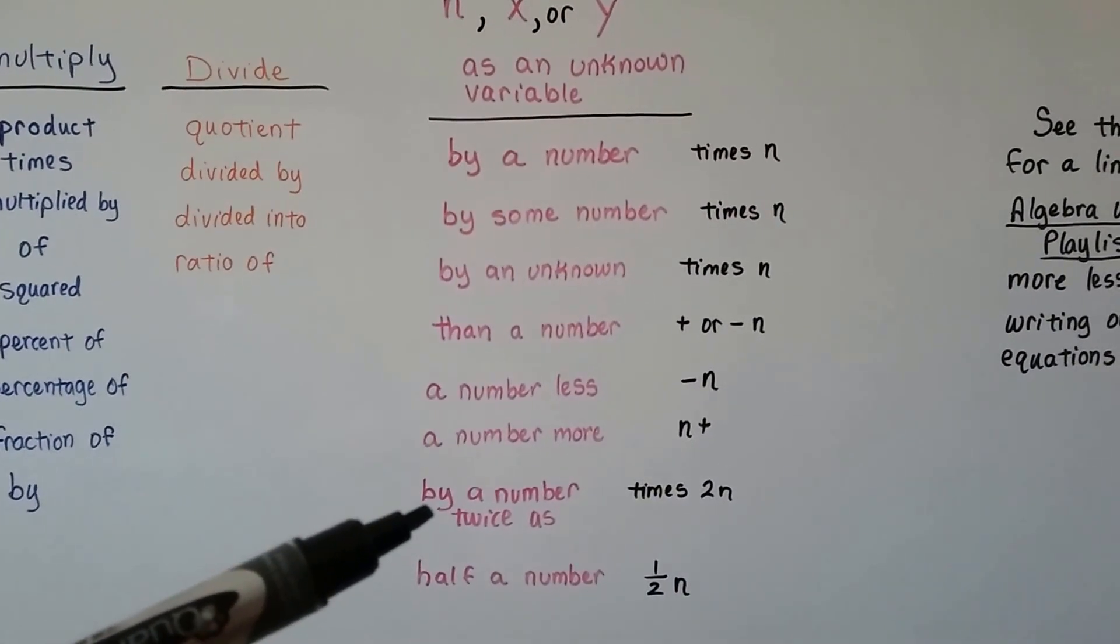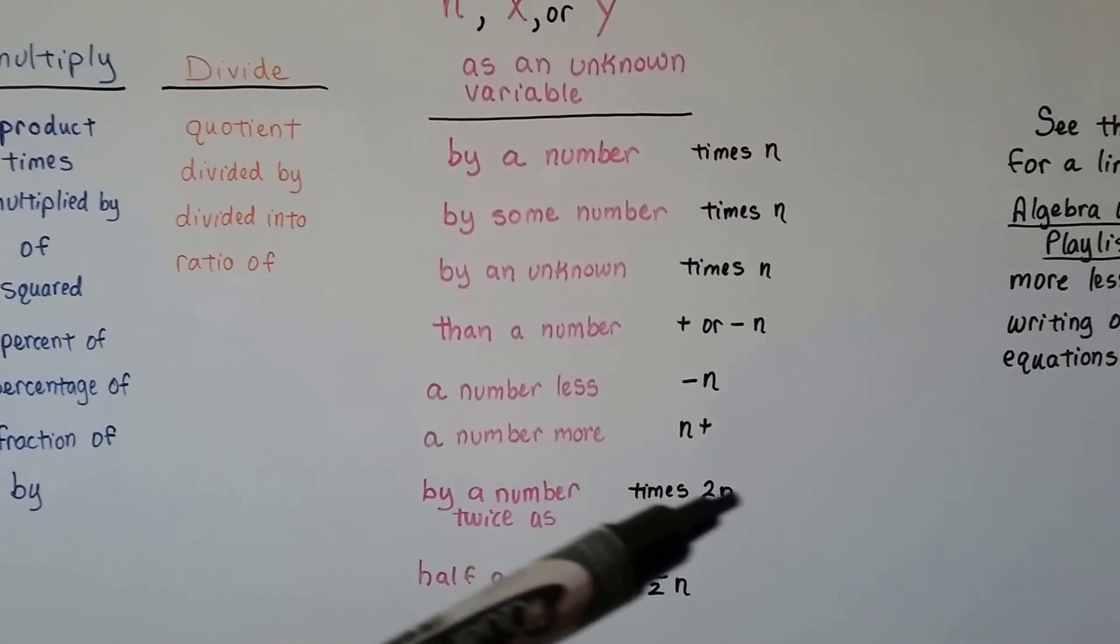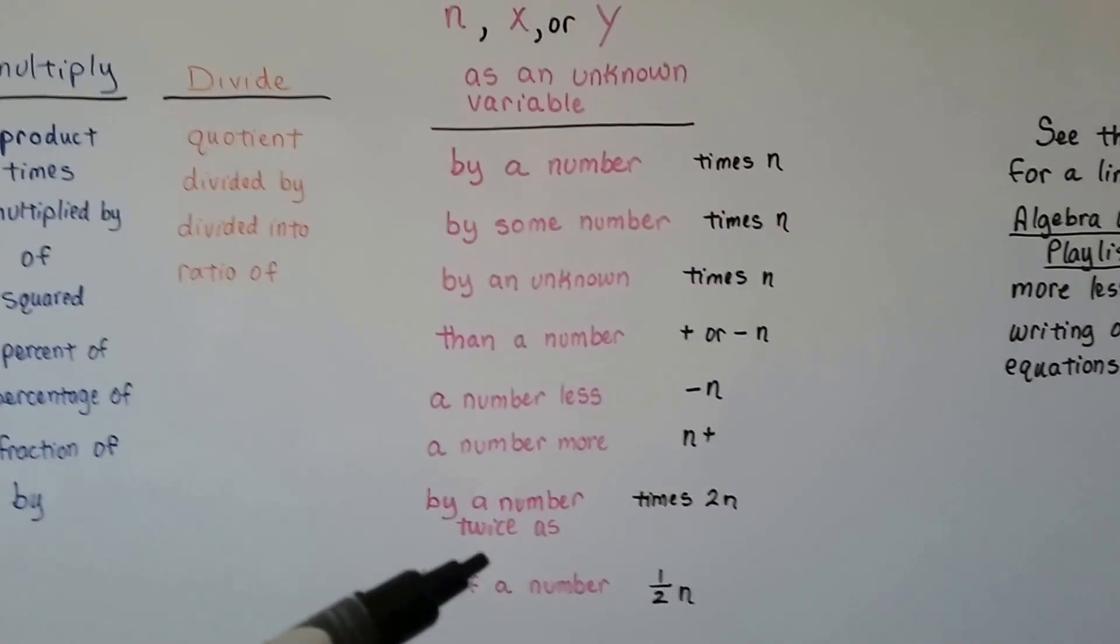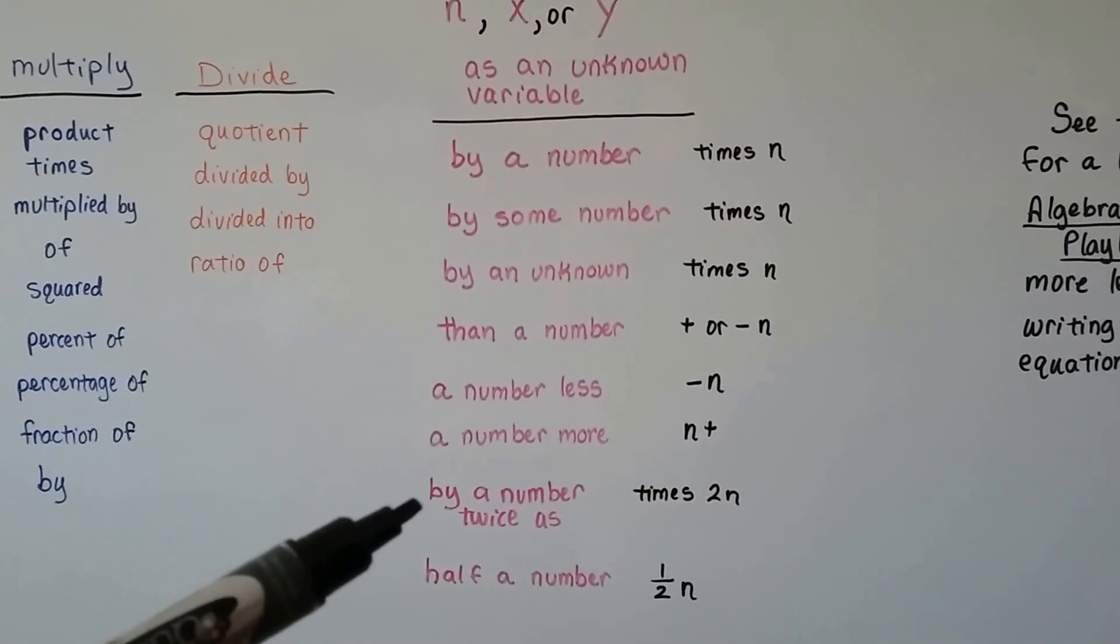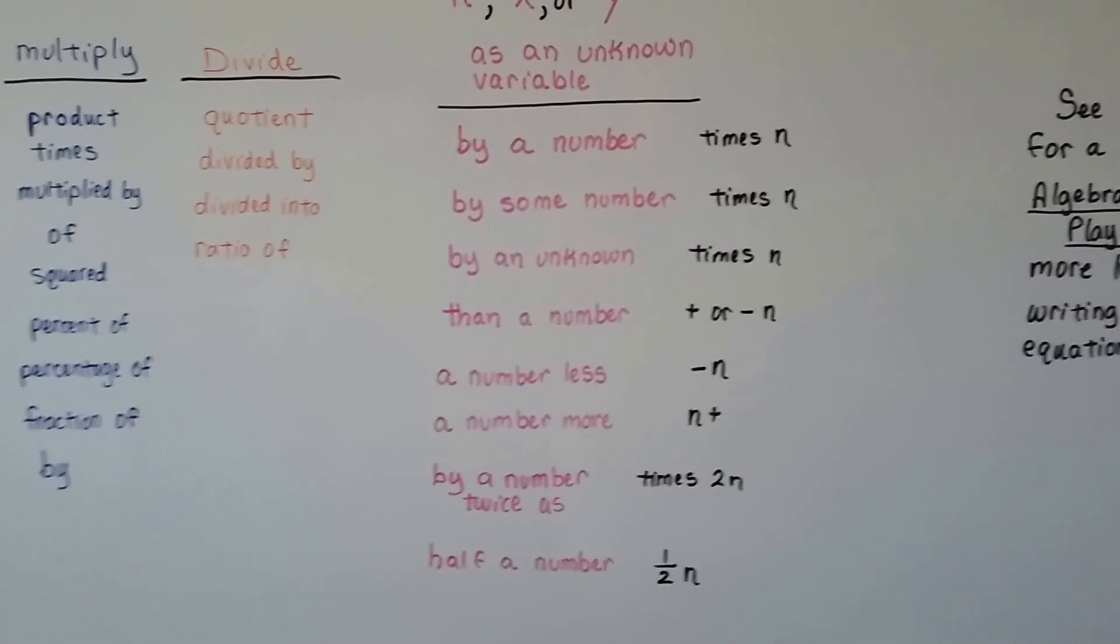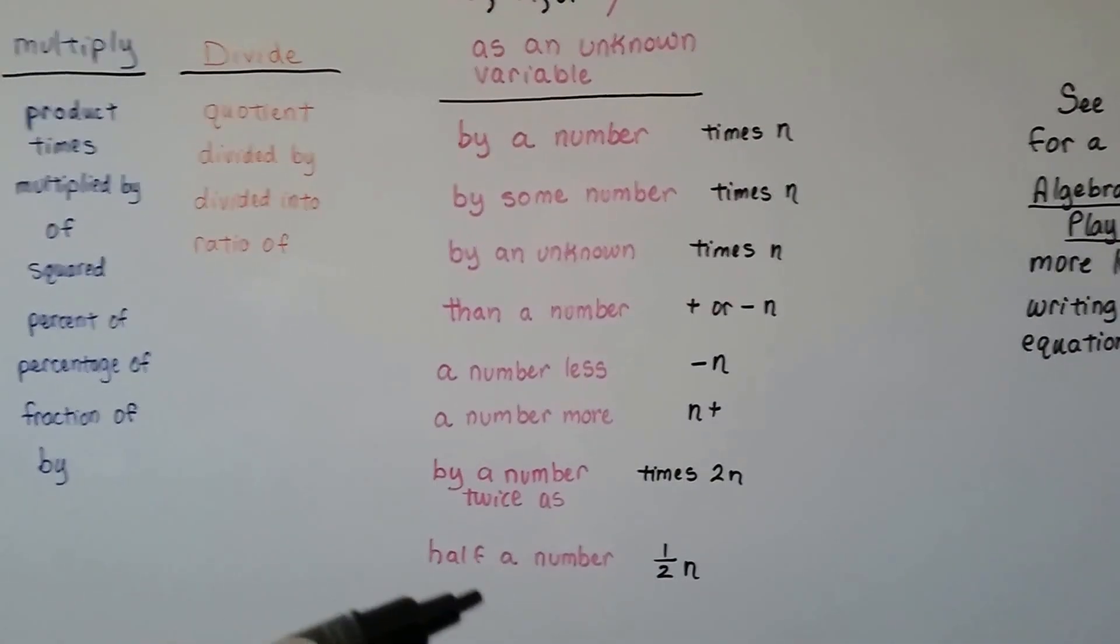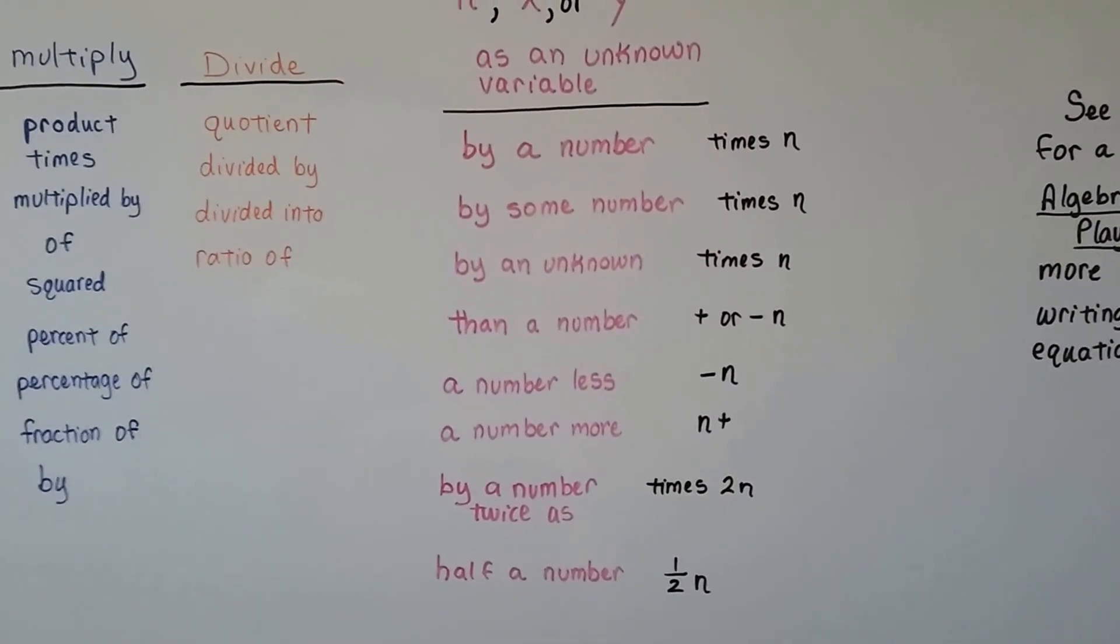If it says by a number twice as, then it's going to be 2N. If it's twice as much, it's plus 2N. If it's twice as less, it's minus 2N. And if it's half a number, it's going to be half N.